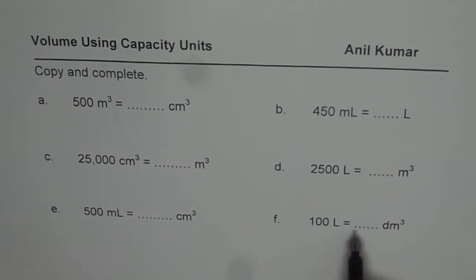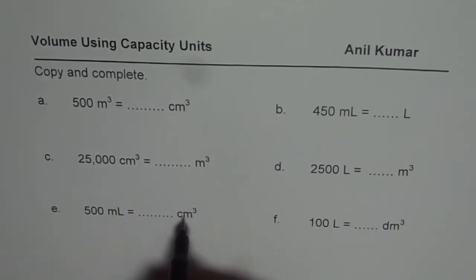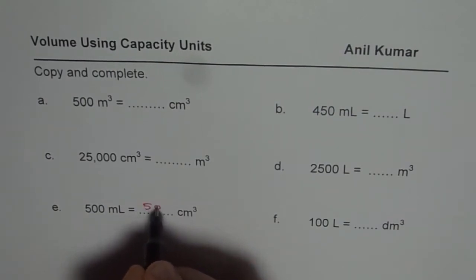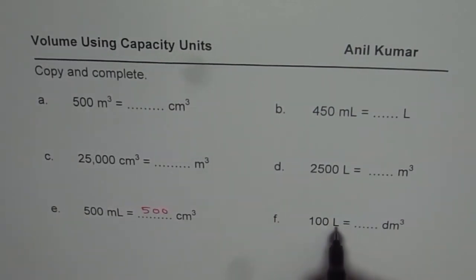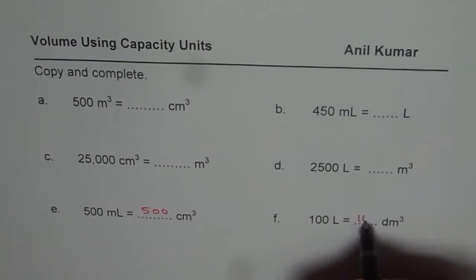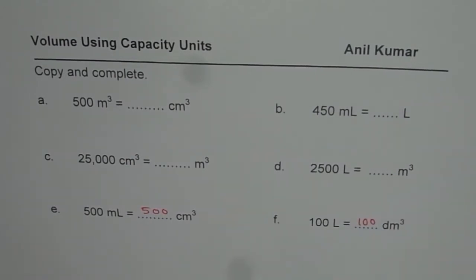One thing which we learned is that milliliters and centimeters cube are same. So we could always write this as 500. Similarly, liters and decimeter cubes are same units. So we could write the same numbers there. So that completes the last two, right?